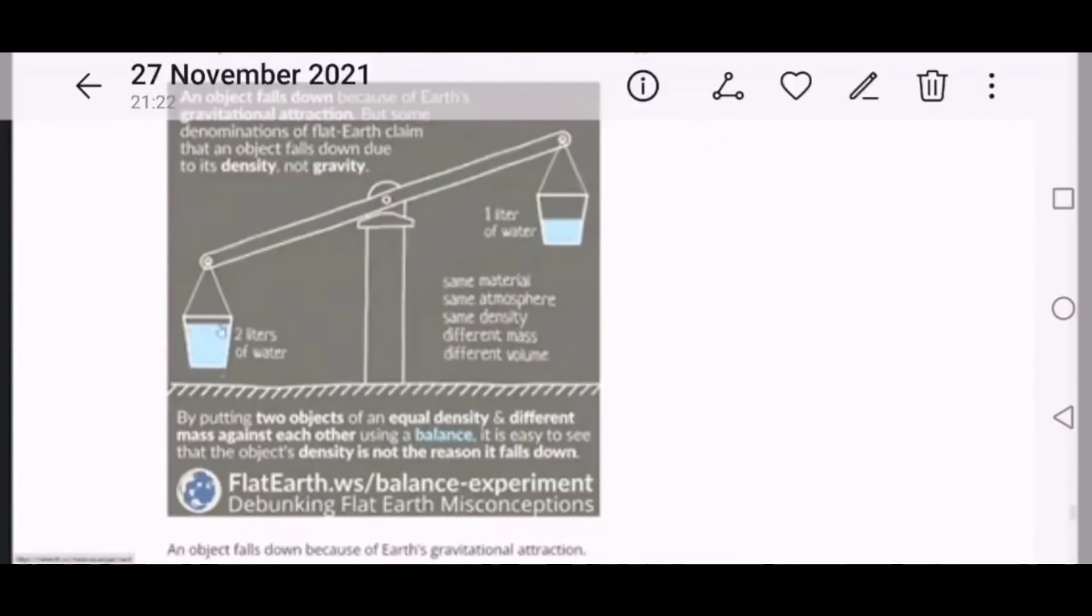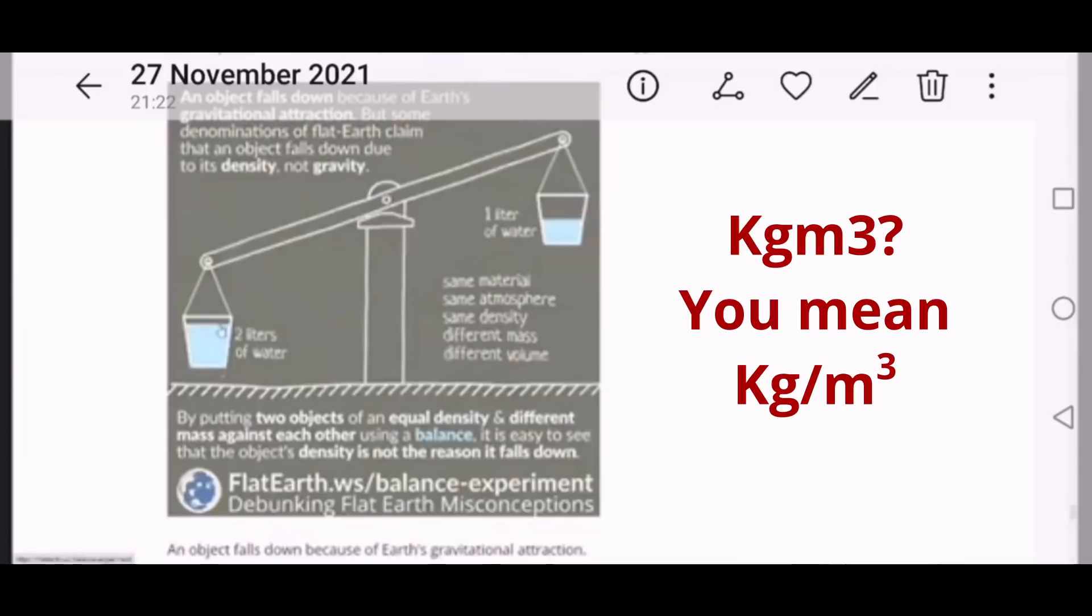So if you keep the density the same, which is kg per m³, then you keep one m³, because obviously kg per m³, the mass per unit volume. So if you keep the unit volume the same and you keep the density the same, then they won't, neither rise nor fall. The balance scale will not tip.